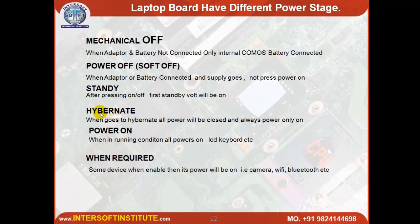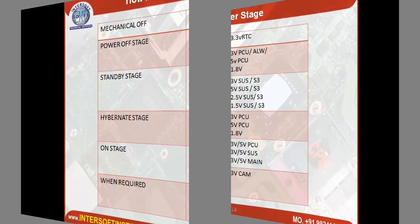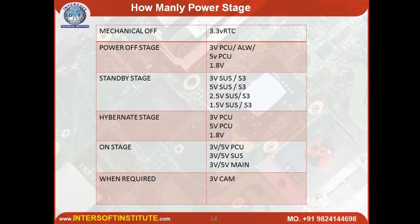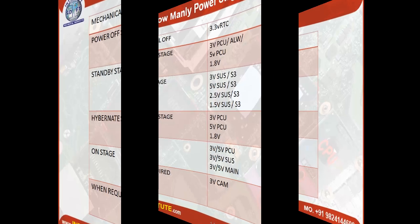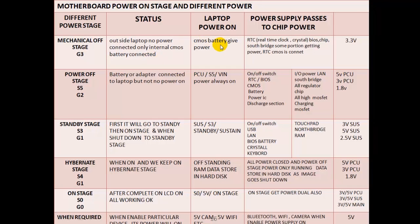The Hibernate stage works differently from standby — Hibernate shuts down the laptop and stores all data on the hard disk as a file. The Standby stage (S3/SUS) keeps 3V, 5V, 2.5V, and 1.5V active. The CMOS battery provides power to the RTC (real time clock), BIOS chip, South bridge, and certain portions. RTC and CMOS are connected.